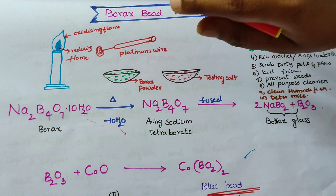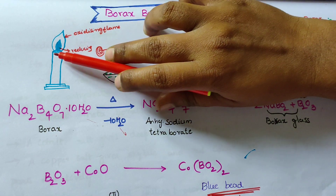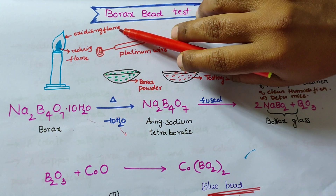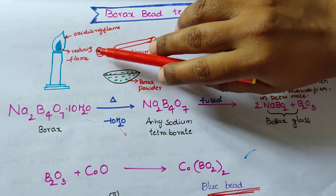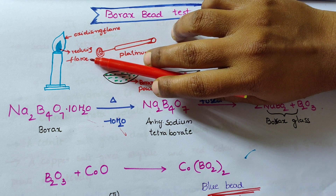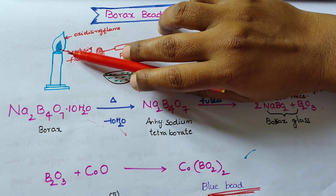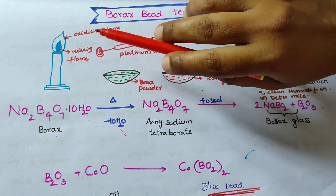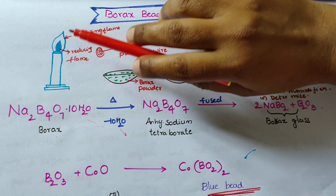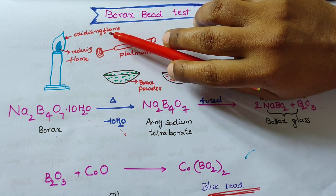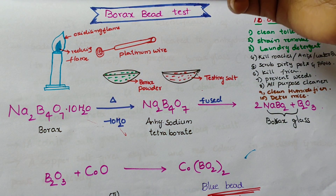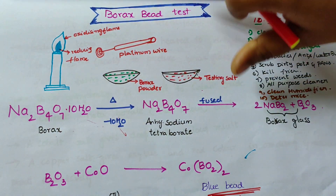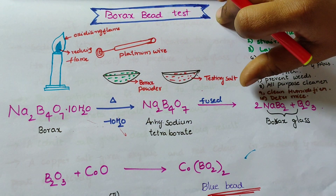If we observe, in the flame the outer flame is the oxidizing flame and the inner flame is the reducing flame. When we expose to the inner flame, that means the reducing flame, it reduces color; and in the oxidizing flame, the colors change.